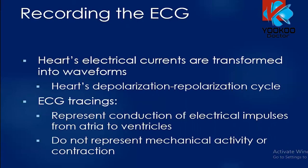The ECG records the electrical activity that starts from the SA node, travels through the atria to the AV node, then to the bundle of His, bundle branches, Purkinje fibers, and finally myocardial cells — resulting in contraction and relaxation of the atria and ventricles. These electrical currents are transformed into waveforms representing the depolarization and repolarization cycle. The tracings represent conduction of those impulses but do not represent mechanical activity or contraction — it is about electrical activity.